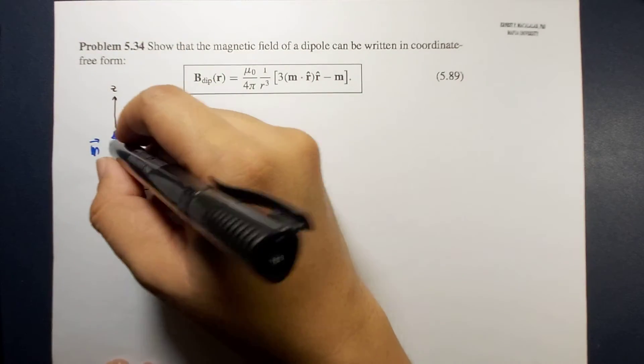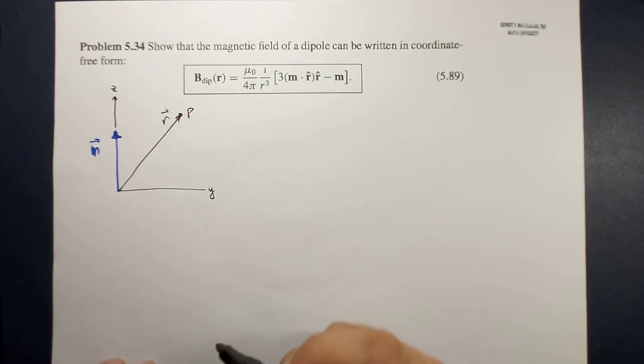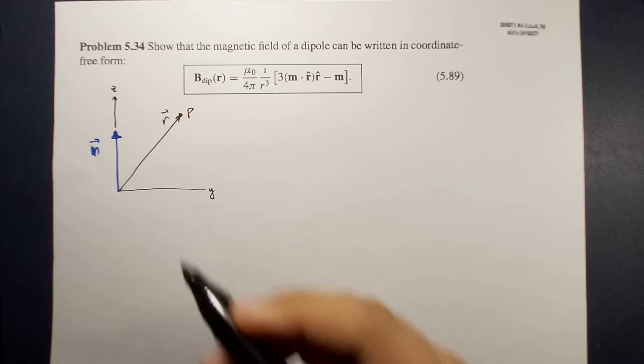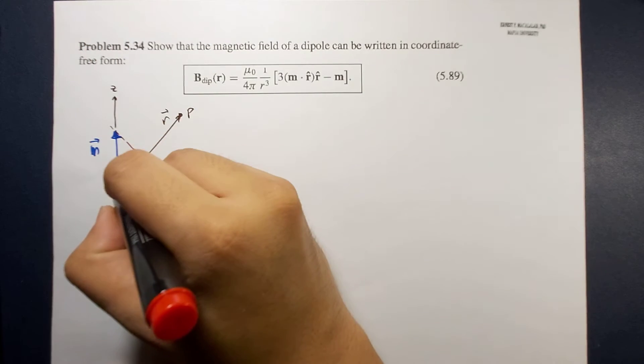The dot product m dot r actually corresponds to the component of m along the r direction. So in this case, that is this projection.